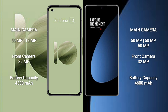The Xiaomi 12s Pro features a triple rear camera setup: 50MP plus 50MP plus 50MP, and a 32MP front camera. The Asus Zenfone 10 has a 4300mAh battery with 30W fast charging, while the Xiaomi 12s Pro has a 4600mAh battery with 120W fast charging support.